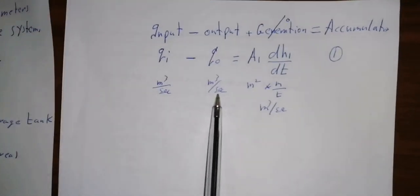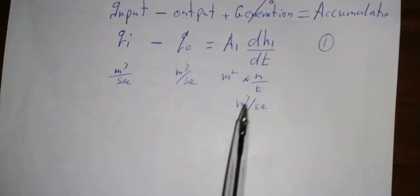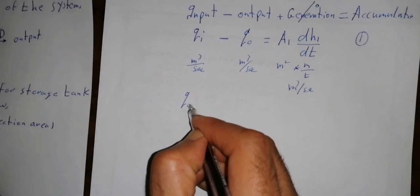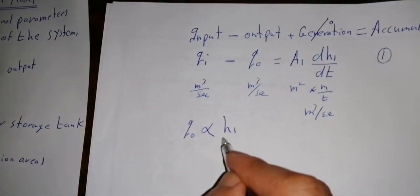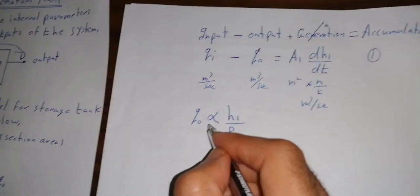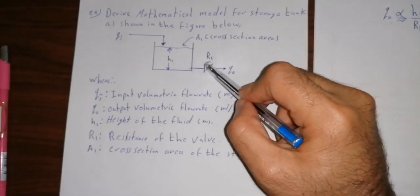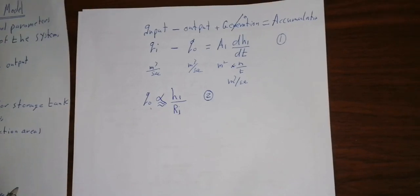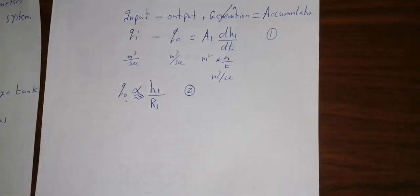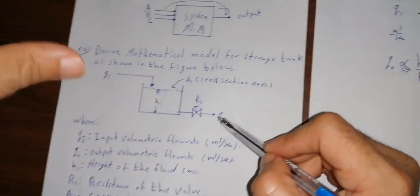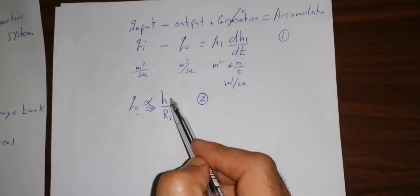Now Q_out is directly proportional to the height of the fluid H1 and inversely proportional to the resistance of the valve R1. This gives us equation 2: Q_out = H1 / R1. When we increase the height, the pressure increases and Q_out increases. When we close the valve and increase resistance, the flow rate is reduced — direct and inverse proportionality.